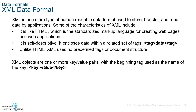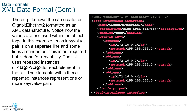The third type is XML. Please write that down with its bullet points. XML is another type of human-readable data used to store, transfer, and read data by applications. It's like HTML, which is a standardized markup language for creating web pages. It's self-descriptive and uses tags just like HTML.